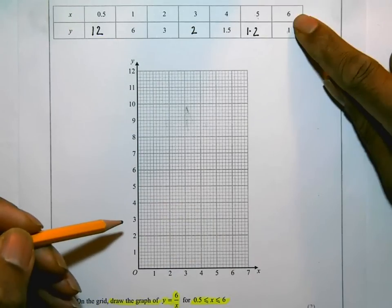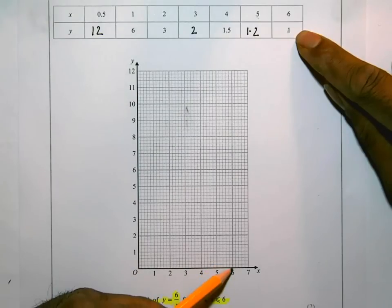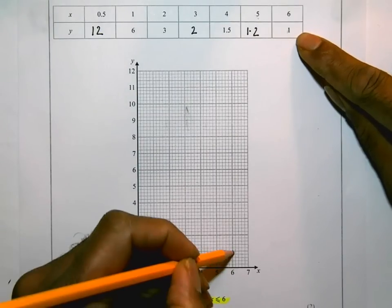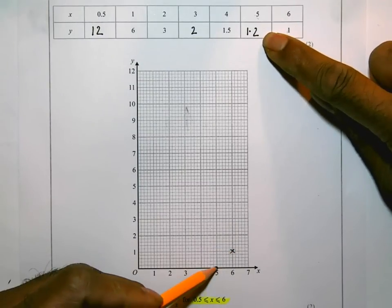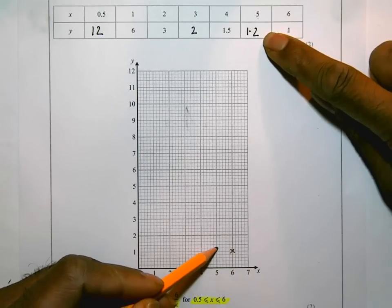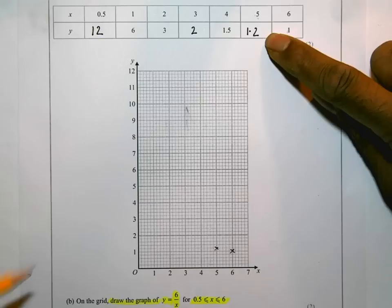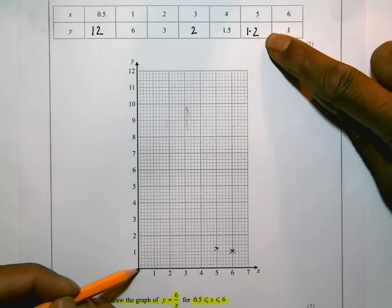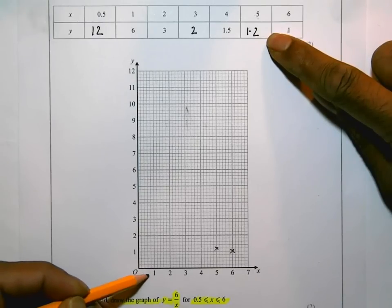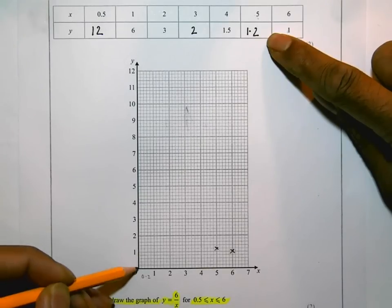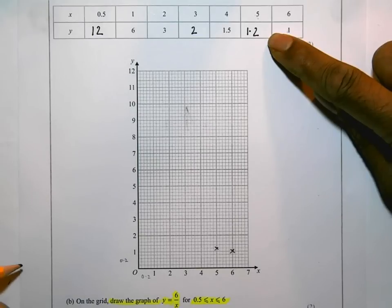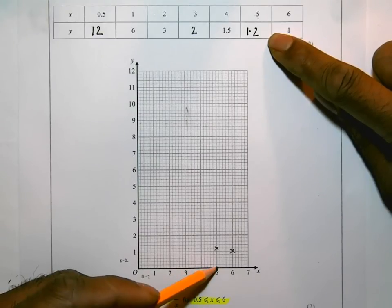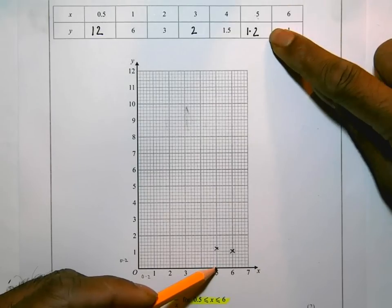So when x is equal to 6, y is equal to 1. That's that point over there. And I'm going to put a cross there. When x is equal to 5, y is equal to 1.2. Now one of the things I didn't say at the beginning, and I should have looked at it, is that on this scale here, you've got 1, 2, 3, 4, 5. And each of those tiny squares that lead up to 1. So every one of those tiny squares stands for 0.2. And on this scale here, you've got 1, 2, 3, 4, 5, exactly the same. And each of those tiny squares is going to stand for exactly the same as well. So that's why this one here, when x is 5, y is 1.2. That takes me to that point there.